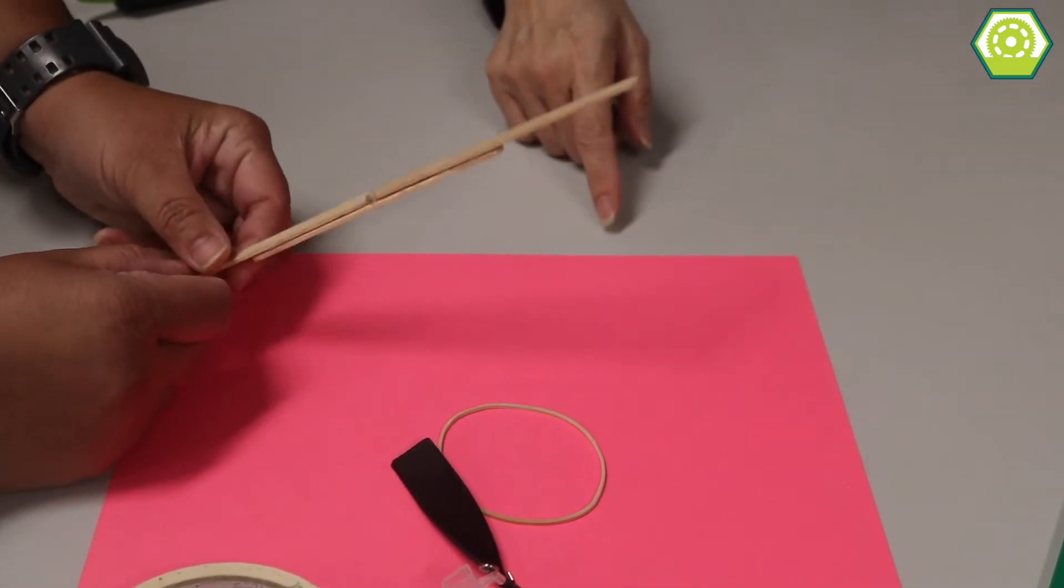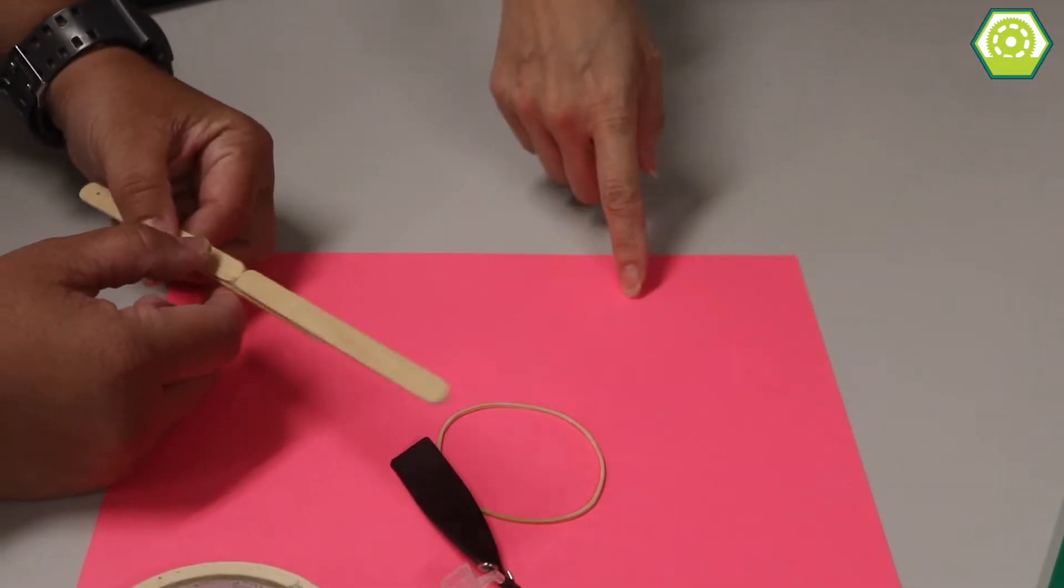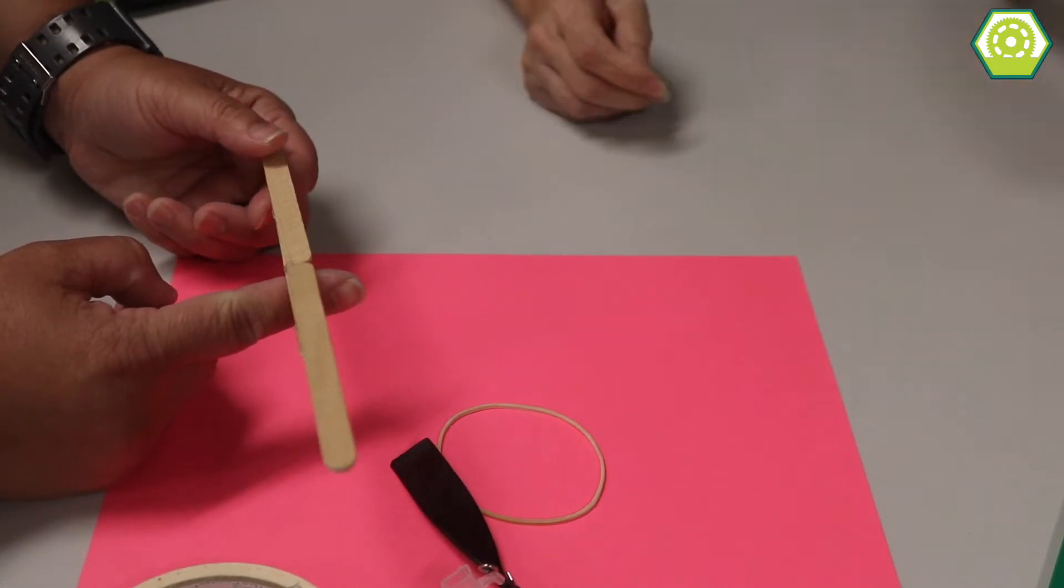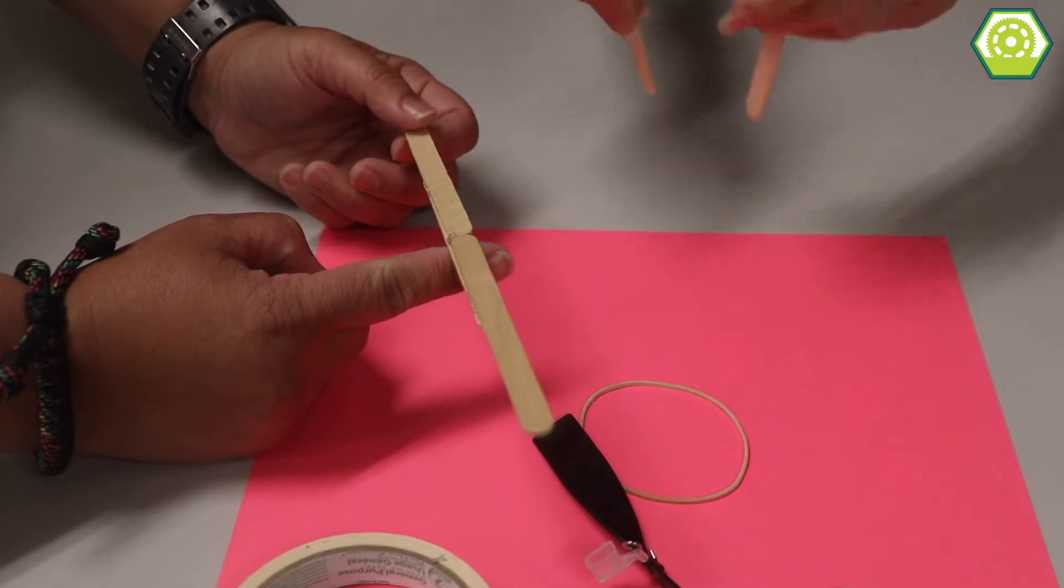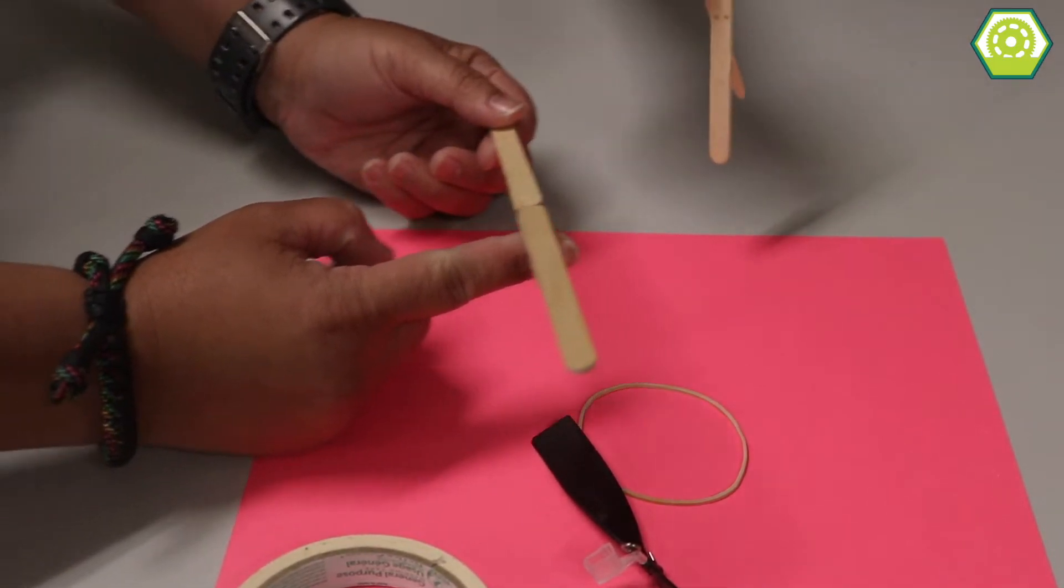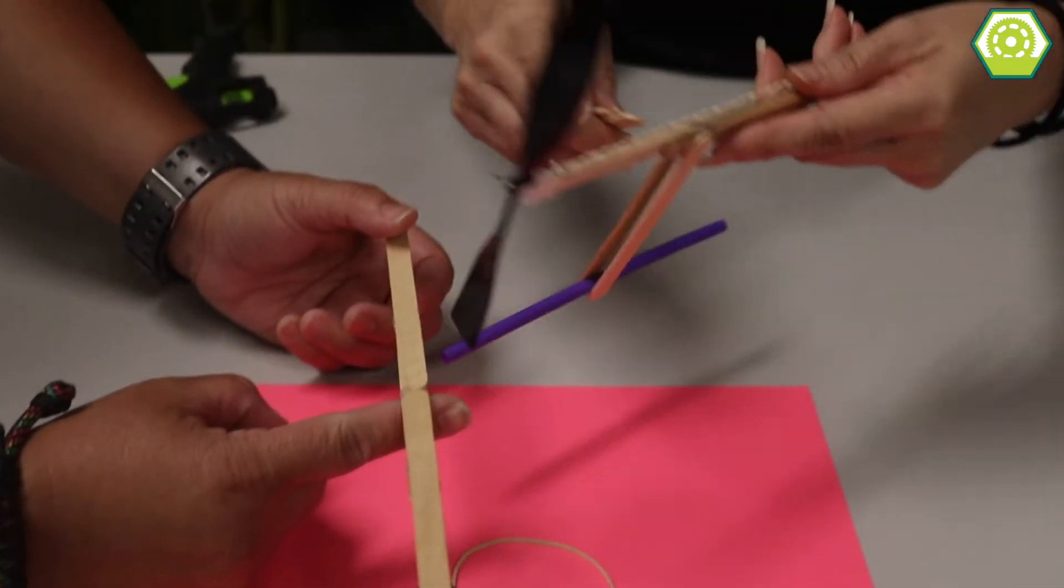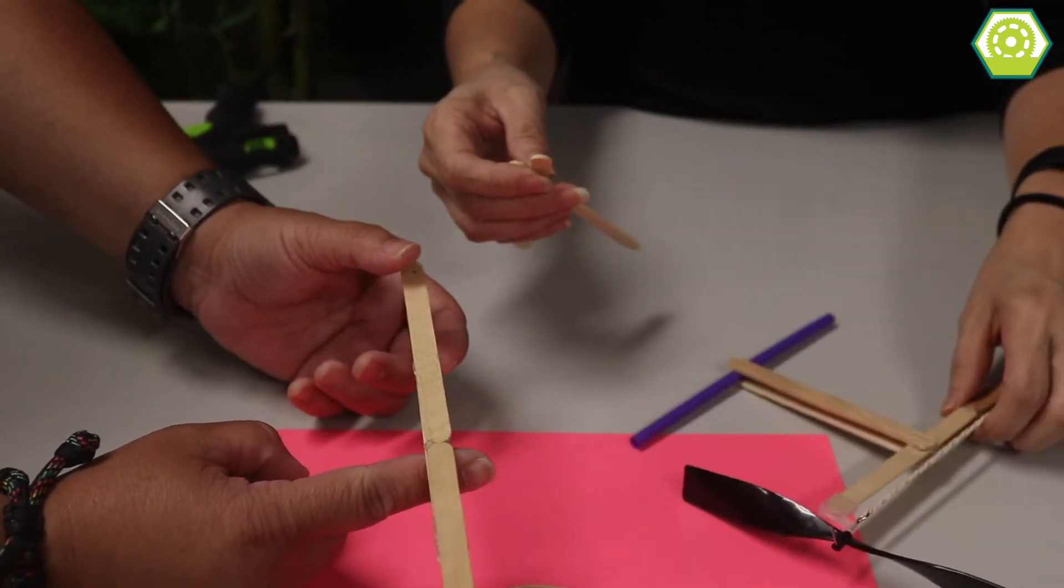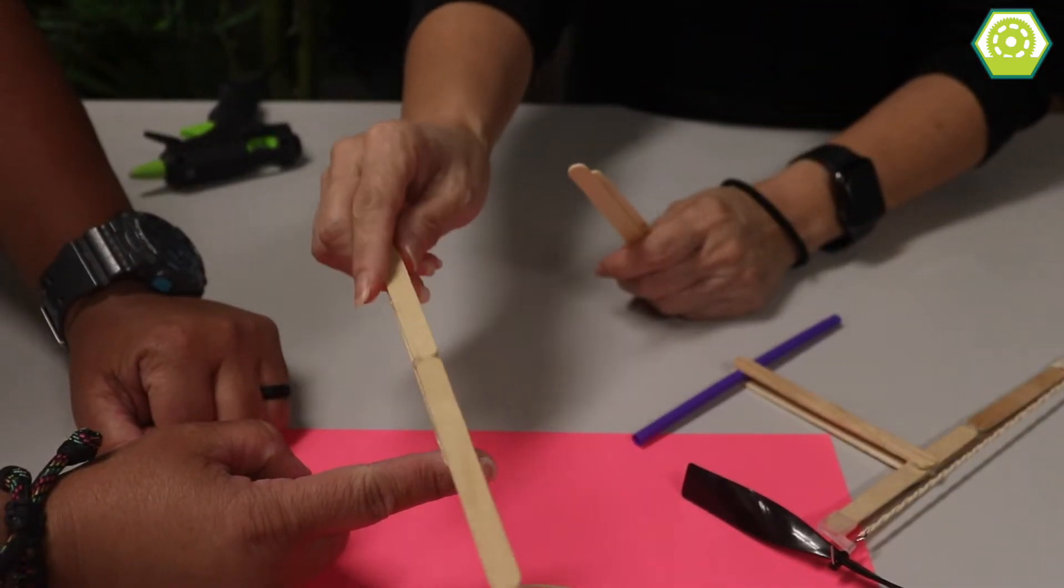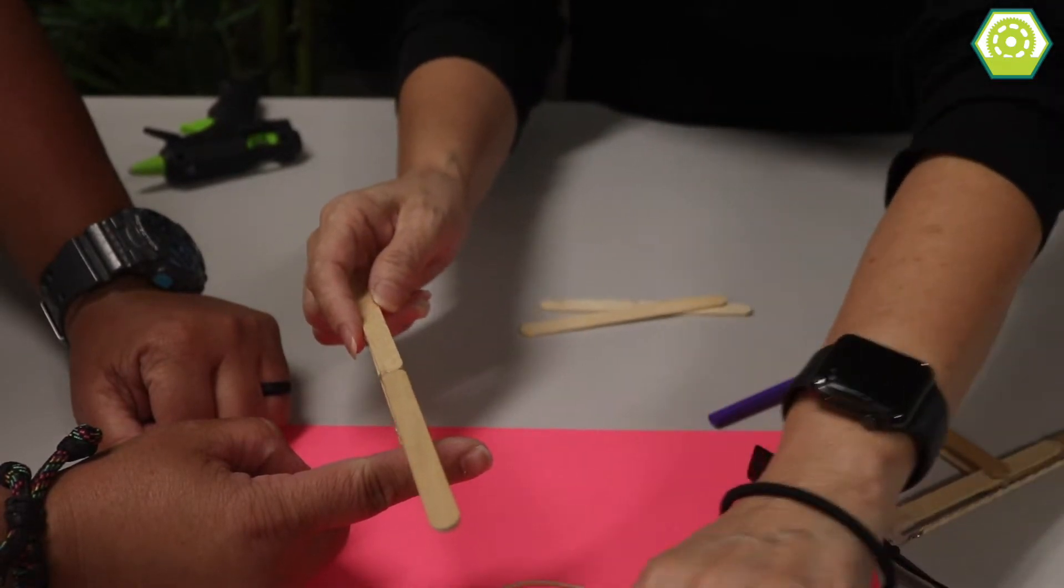All right, now we need to find like the balance or the middle of it. That's going to help us, yes, the center, because we want to be able to put these two popsicle sticks in between. You see right here, they're in between. Oh, it's not centered. Yeah, it's not centered, and that kind of, if it's not centered, it kind of makes it go wobbly. But we need to put the propellers on first.